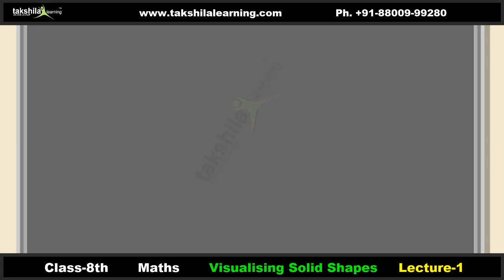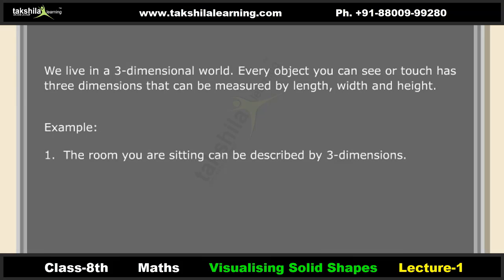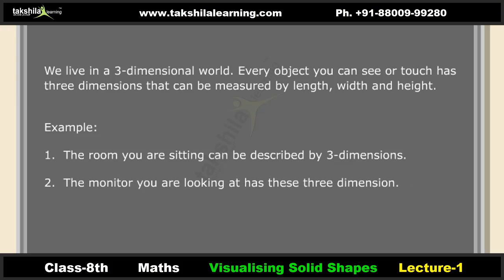Views of 3D shapes: we live in a three-dimensional world. Every object you can see or touch has three dimensions that can be measured by length, width and height. For example, the room you are sitting in can be described by three dimensions, and the monitor you are looking at has three dimensions.